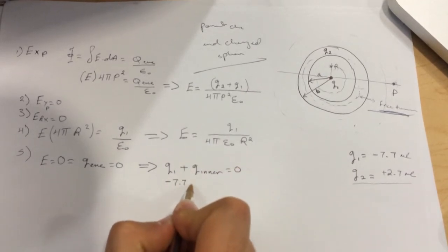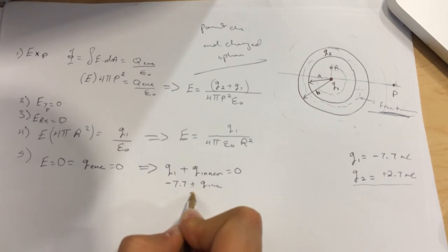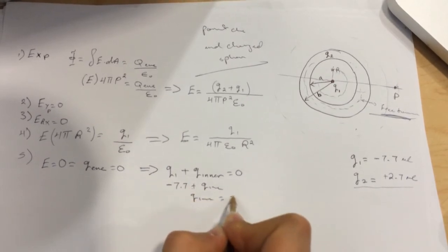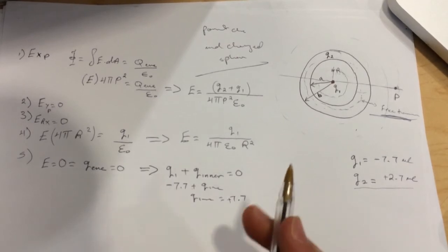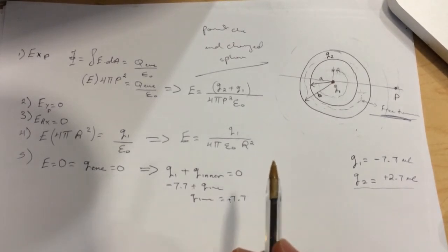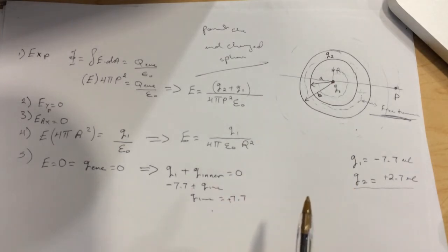So minus 7.7 plus Q inner, so Q inner will be equal to 7.7, and this is positive. We found the charge on the inner surface.